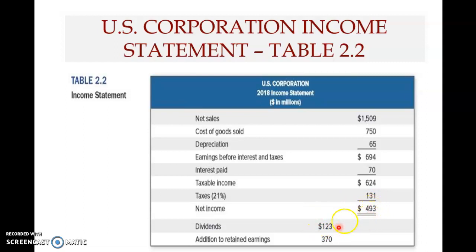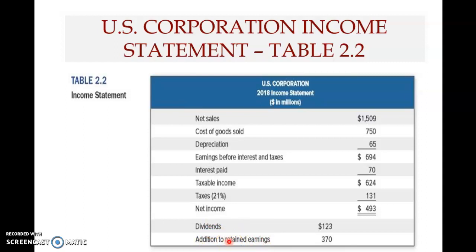From this net income, the company can declare a certain amount as dividends. By convention, dividends are typically less than the total net income. For example, 123 million dollars is paid as dividends, and the remainder — 493 minus 123, which is 370 million — becomes the addition to retained earnings, also called yearly retained earnings. Note that this is different from the retained earnings on the balance sheet, where retained earnings are cumulative.